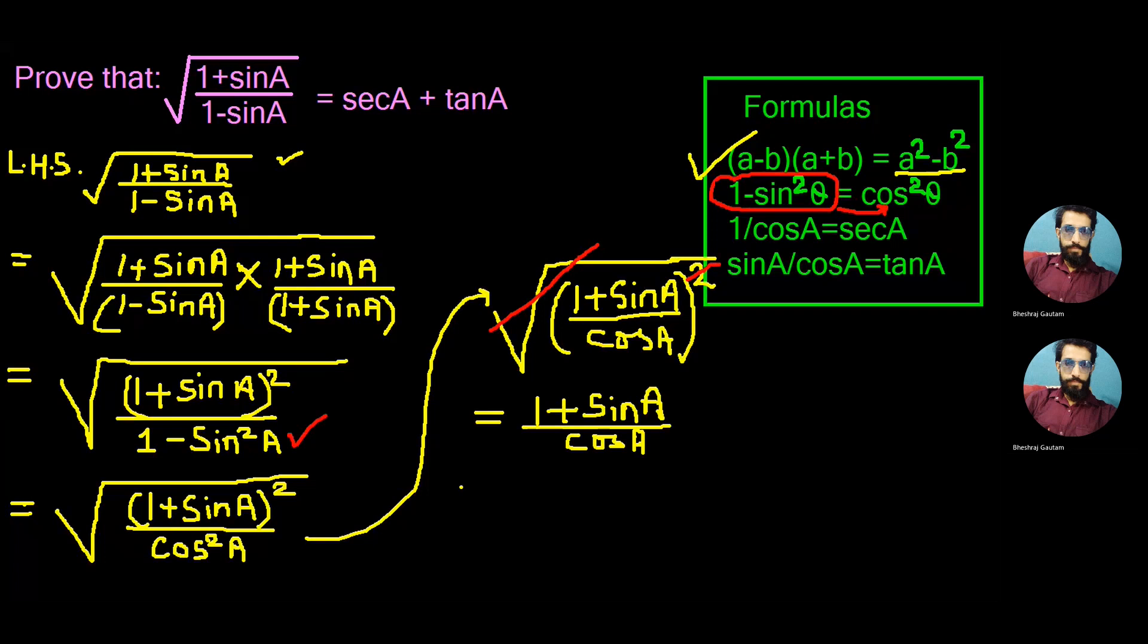Now in the next step we separate the denominator and distribute it to both one and sin A, and write that as one by cos A plus sin A by cos A. And this is permitted by mathematics.